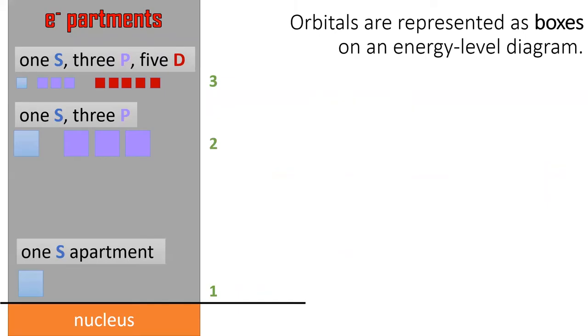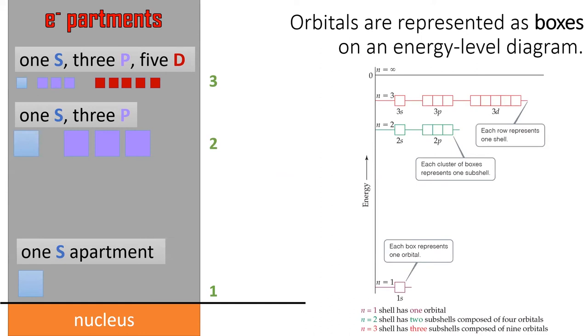Last lesson I displayed the energy levels as stories on a building and the orbitals as apartments within the building. From now on we'll represent orbital energies on an energy level diagram like the one shown to the right. The rows represent the energy levels. The clusters of boxes represent the subshell, such as an s, p, or d, and each box within a cluster represents a single orbital.